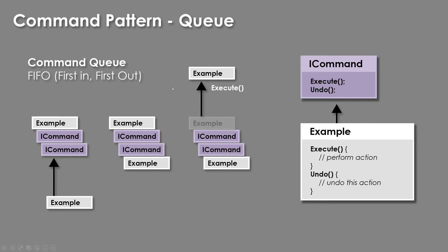Another example of the command pattern would be using it as a queue. A queue is going to be very different because the first command that you put in there is also going to be the first out — first in, first out. The times where you would want to use this is if you wanted to wait for things to happen in a sequence. In a turn-based game, you could put in all your actions for all your characters and queue those actions up in a command list, and reorder them based on speed stat or whatever. You're creating a list, calling things sequentially, and then calling the next one once that's done. You'll see this a lot in turn-based games like digital card games.